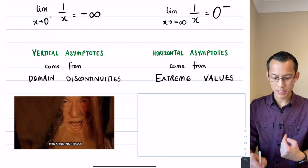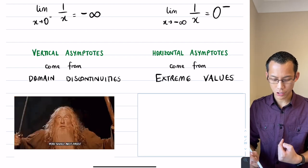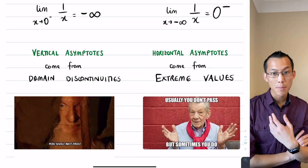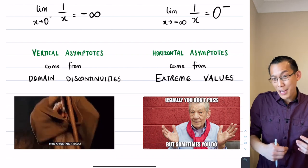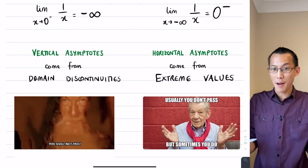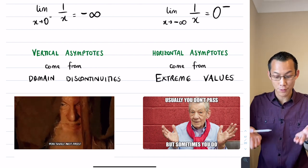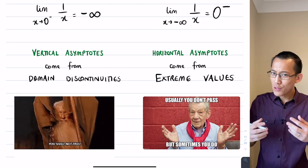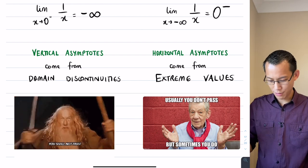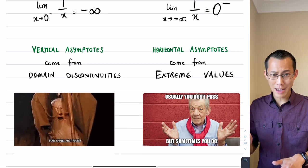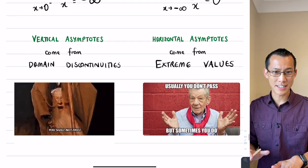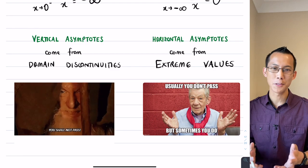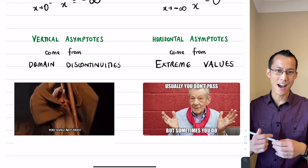Horizontal asymptotes, though, are a completely different kettle of fish. You can cross horizontal asymptotes — sometimes multiple times, sometimes an infinite number of times, if you have the right function. So even though we call them both asymptotes, they actually behave quite differently, and I'm going to give you some worked examples now that highlight that.